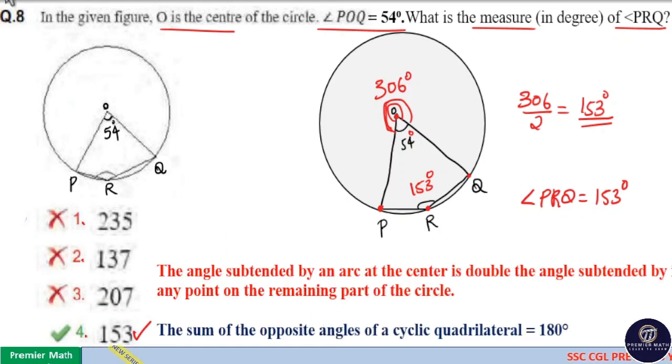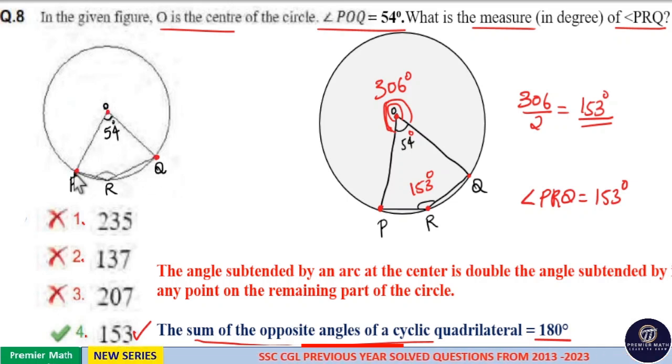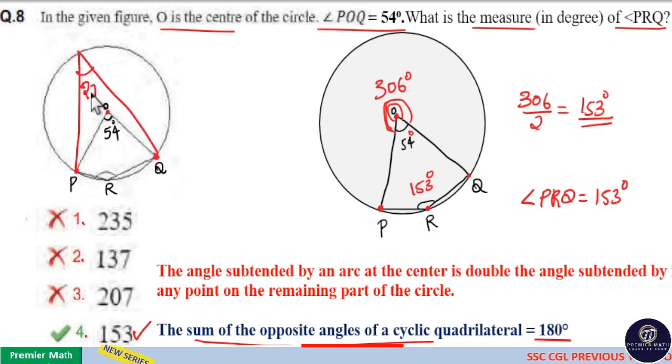Here is another concept you can use: the sum of opposite sides of a cyclic quadrilateral is 180 degrees. Here, arc PQ creates 54 degrees with the center, which means arc PQ can create half of 54, that's 27 degrees, at any point on the remaining part of the circle.